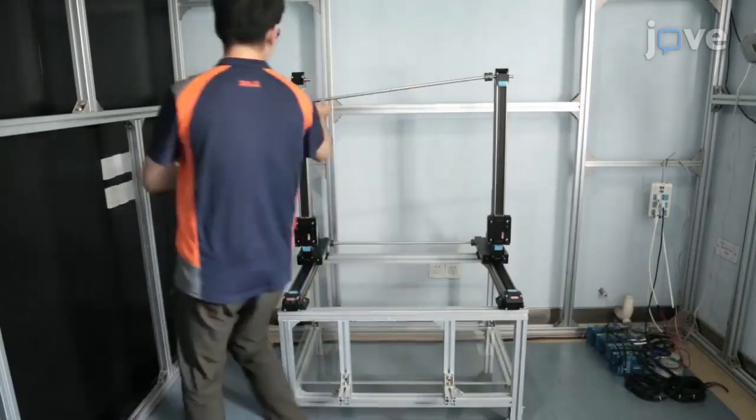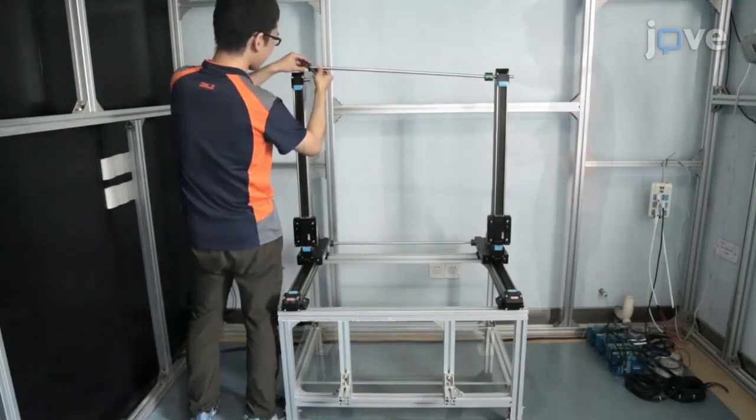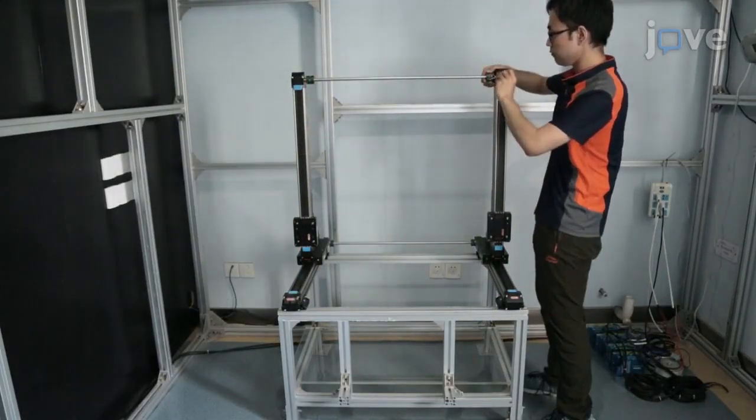Connect the two Z-rails with a connecting shaft and diaphragm couplings and tighten the lock screws of the couplings.